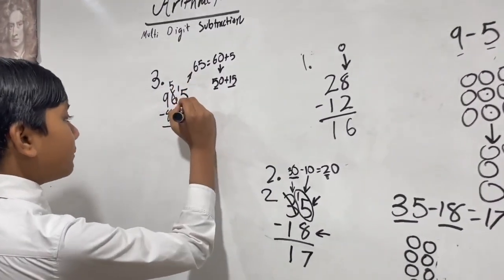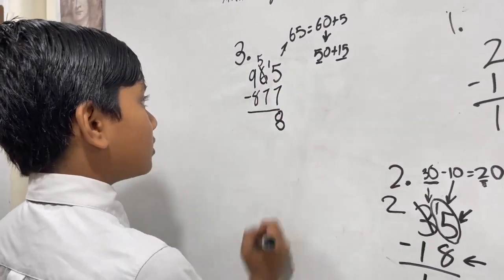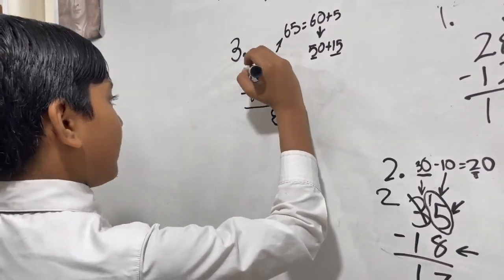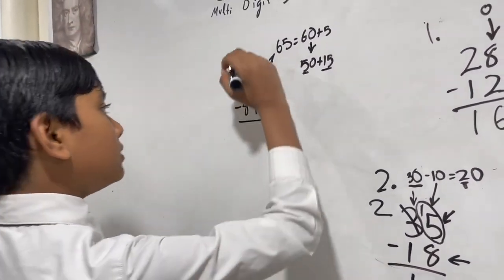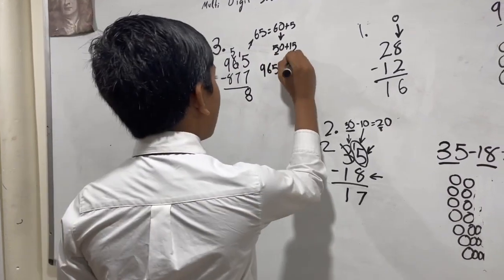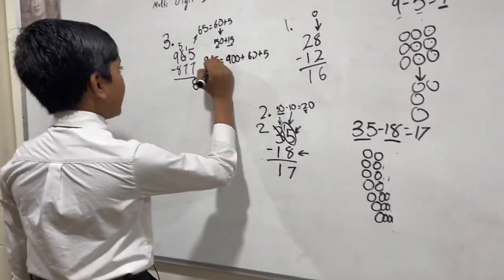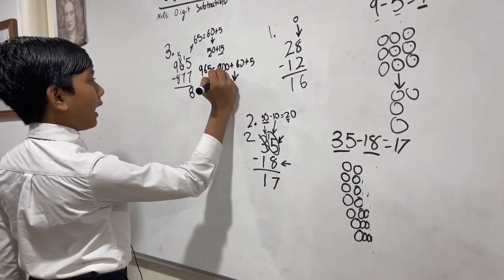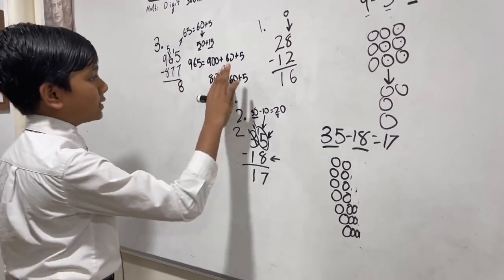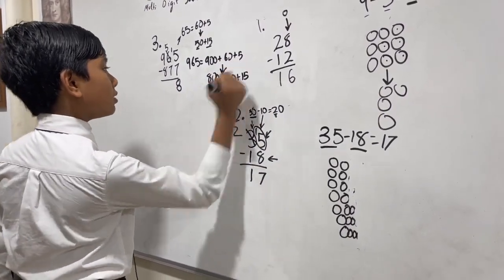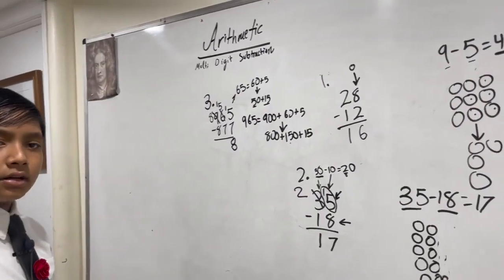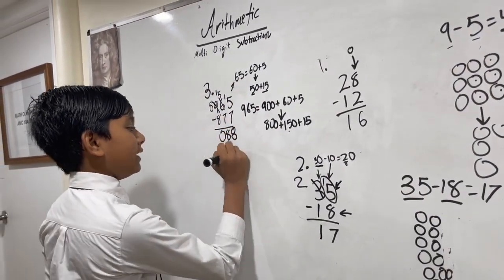15 minus 7 is gonna be 8. But now 5 minus 7 is gonna be harder. We're gonna have to borrow from this guy. So here's a reminder that this 9, which represents 900, can be regrouped into 800 and 100, which then joins with the 5 in this scenario. This becomes 8 and this is 15. So now 15 minus 7 is 8. 8 minus 8 is 0, 8 minus 8 is 0. Wait, 88.